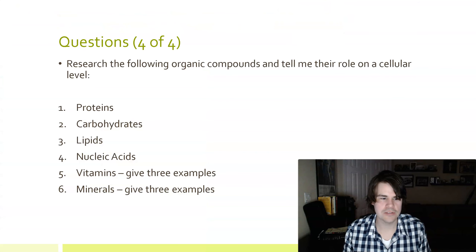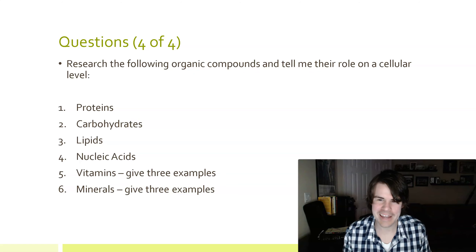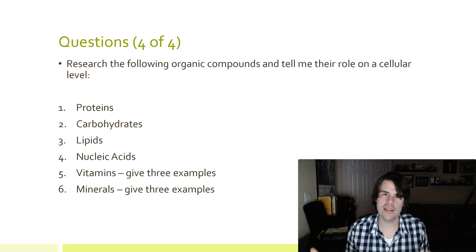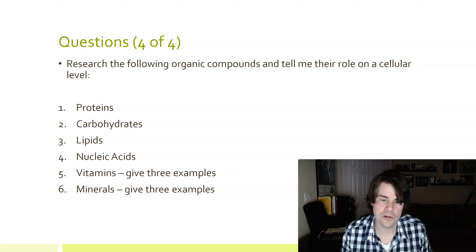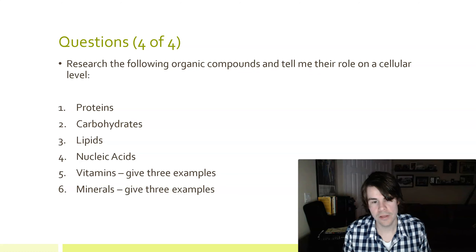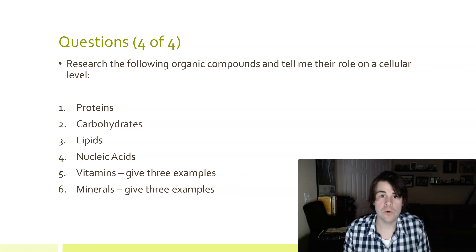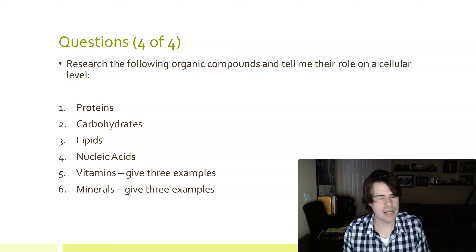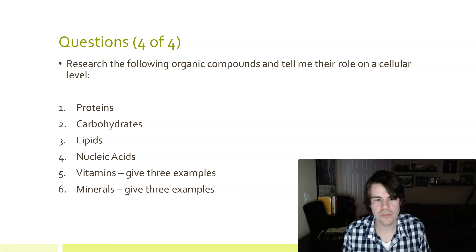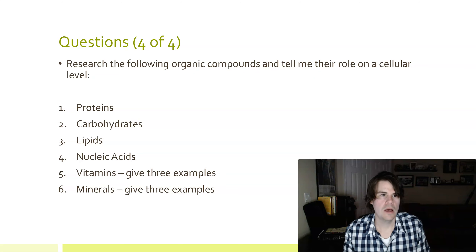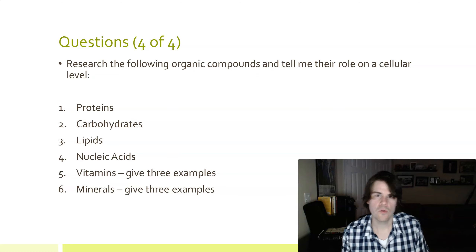Here's question set four of four: Research the following organic compounds and tell me their role on a cellular level. What are proteins used for? What are carbohydrates used for? What are lipids used for? What are nucleic acids — DNA and RNA — used for? For vitamins, give me three examples and what they do — for instance, what does vitamin A, C, K, or D do? We're all probably deficient in vitamin D. Also give me three examples of minerals — such as calcium, phosphorus, zinc — and what they do.